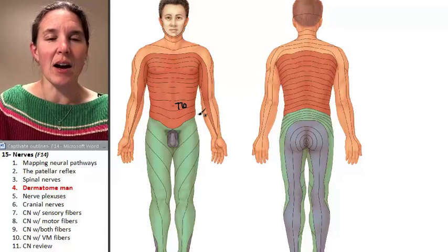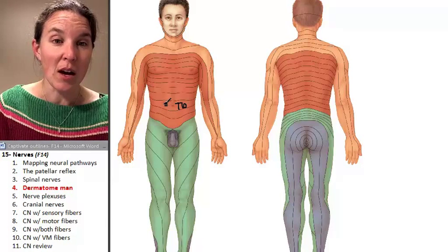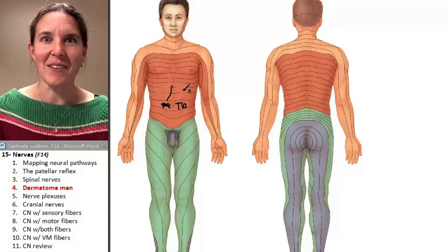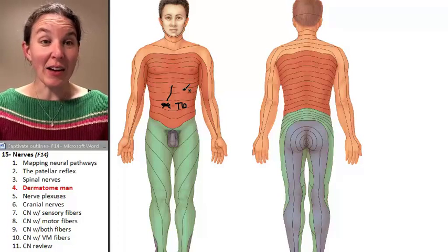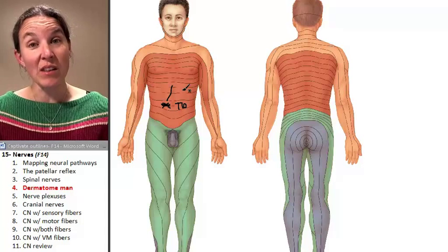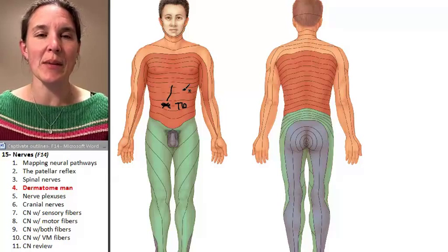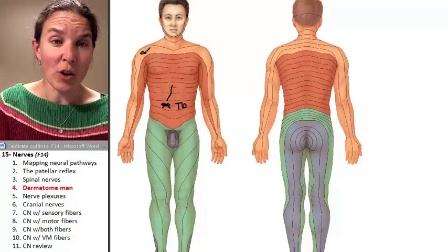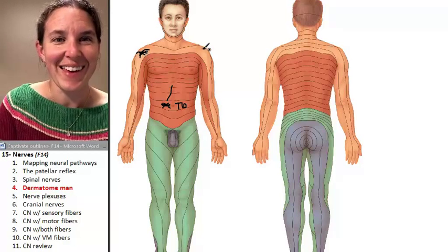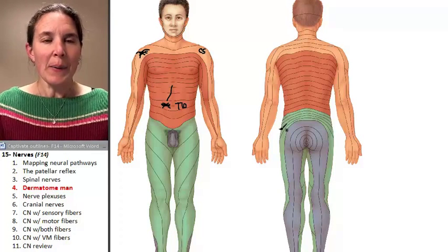A question could be something like — I'm going to use T10 again because it's the only one I know — imagine there's a spider crawling on your belly button. What is the spinal nerve allowing you to feel that sensation? You'd look at Dermatome Man and say: T10. If you had a spider crawling on your shoulder, you could answer that too. That's C5 — C5 is letting you feel the sensation right there.